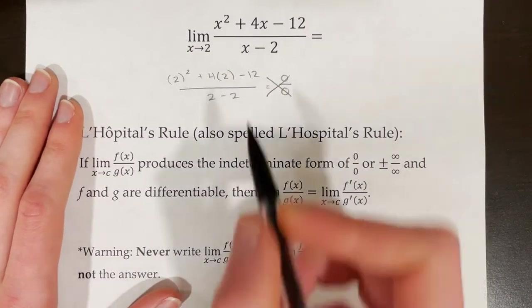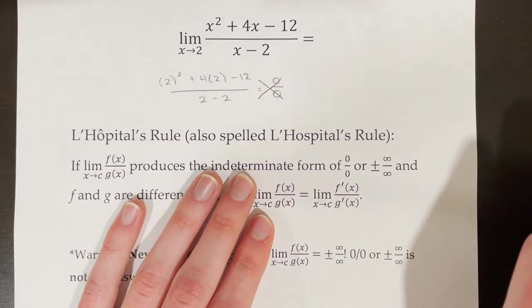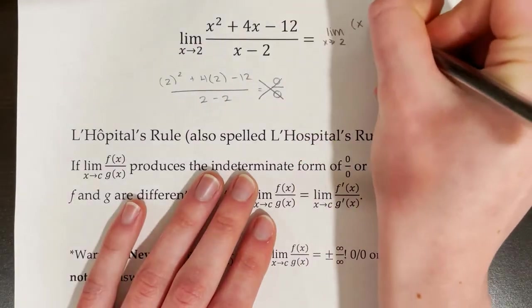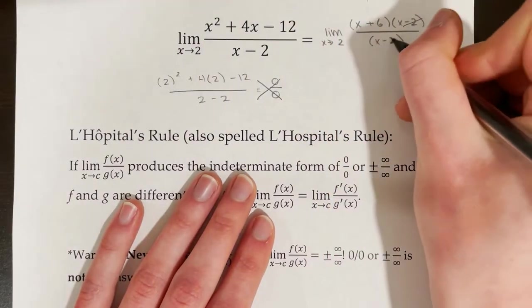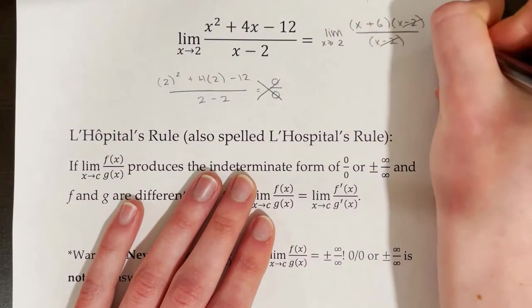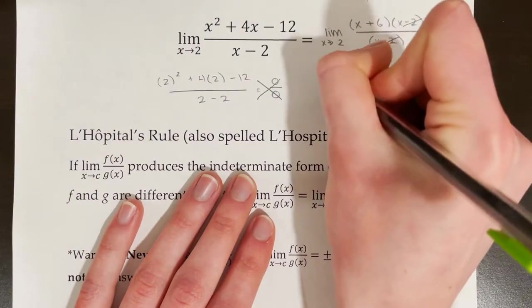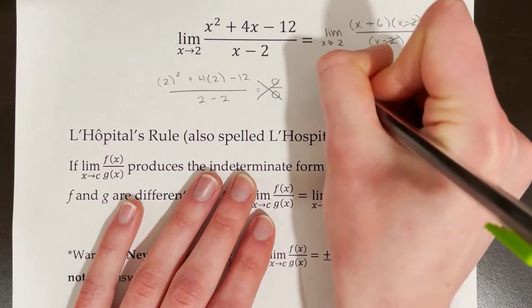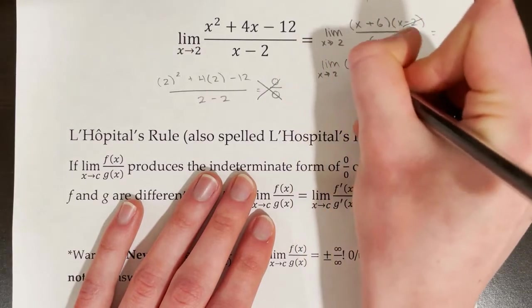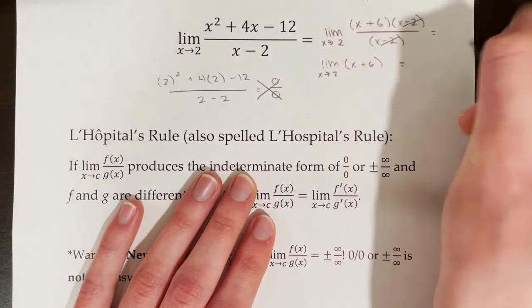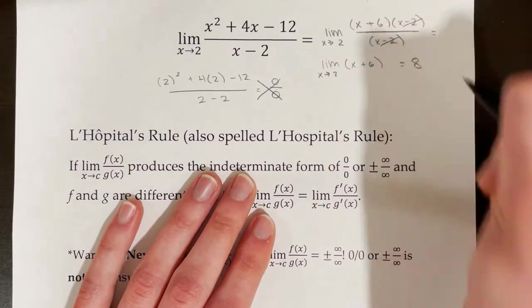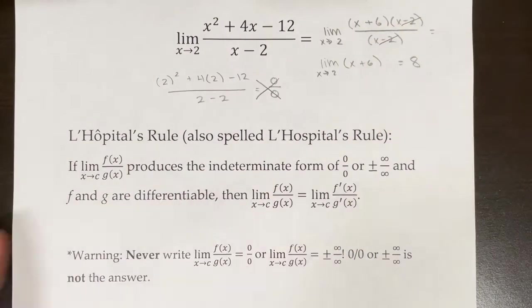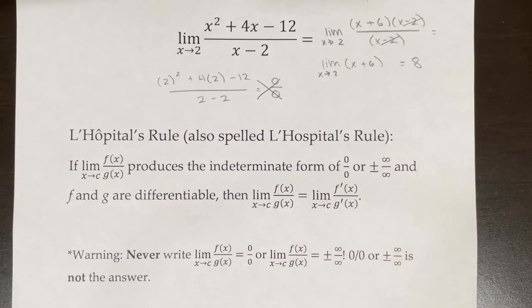So what we need to do in a case like this is factor. Then we cancel the common factors from the top and bottom, and we're left with the limit as x approaches 2 of x plus 6. Then we use direct substitution: 2 plus 6 is equal to 8. This is the method we learned in a previous topic.